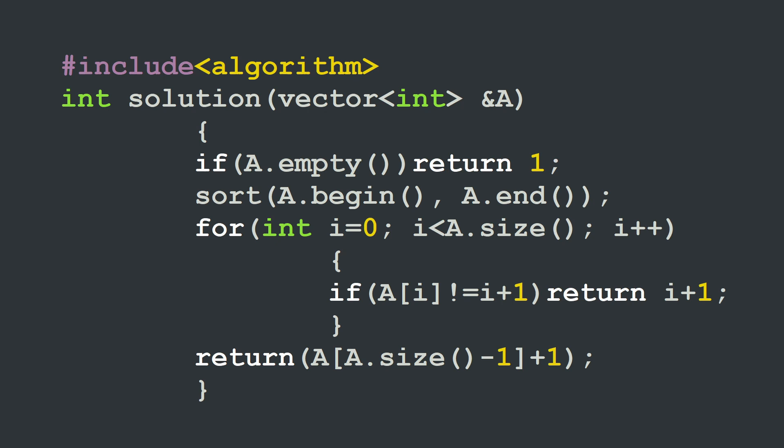After the array is sorted, I can run a for loop using an integer i from 0 to the size of my array. And for each index i, I will check if A[i] is different than the value i+1.